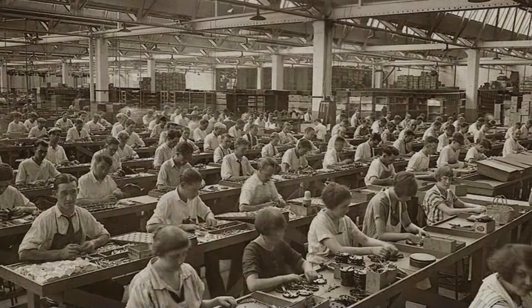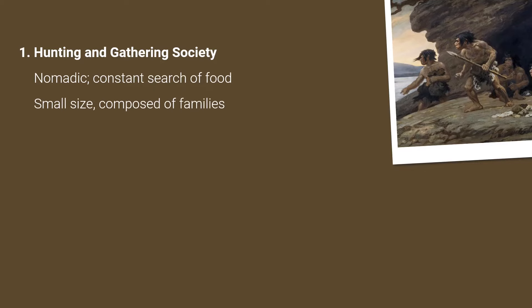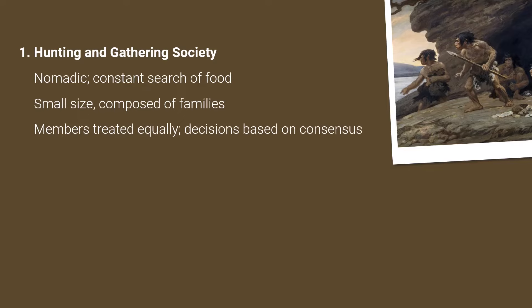The earliest recognized form of society is the hunting and gathering society. This form of society was very simple. It was nomadic, meaning it had no permanent territory because it was in constant search of food. It was small in size, composed mainly of families, and its members treated each other equally, while decisions were based on consensus.